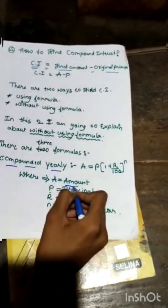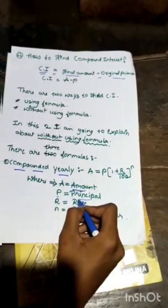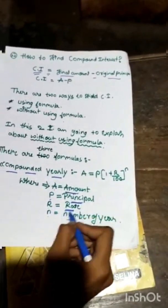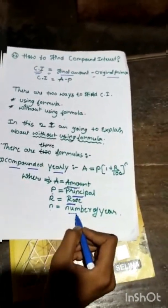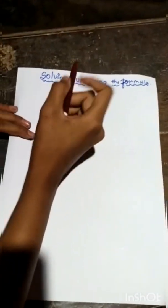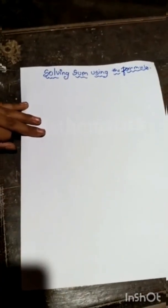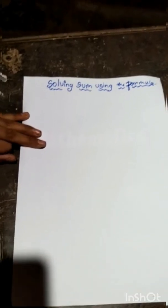The formula of compounded yearly is amount equals A equals P into (1 plus R by 100) raised to N. Where A equals amount, P equals principal, R equals rate, and N equals number of years. So I will solve one sum on that formula called compounded yearly.